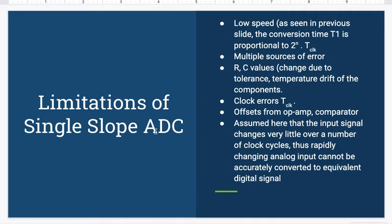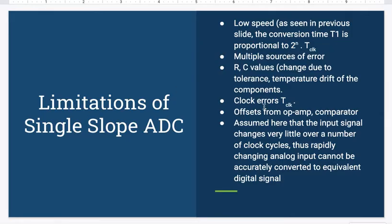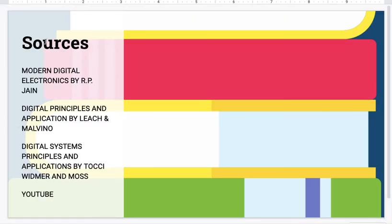These are some limitations of the slope, low speed as we discussed before, the conversion time t1 is proportional to 2 to the power N into TCLK. The multiple sources of error include the R and C values, the changes in them can occur due to tolerance of the device, temperature drift of the components, then there are clock errors. The time elapses directly proportional to the period time of the clock, so clock errors can affect the result drastically, then the offsets from op-amp comparator, however low they can cause errors. Also we have assumed here that the input signal changes very little over the time of clock cycles, thus rapidly changing analog input cannot be accurately converted to equivalent digital signal.